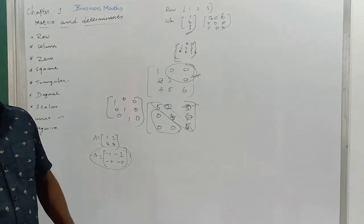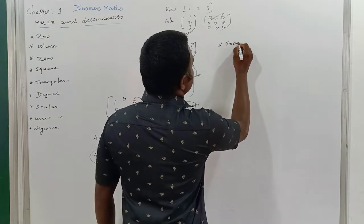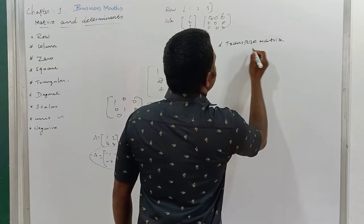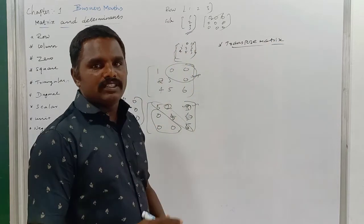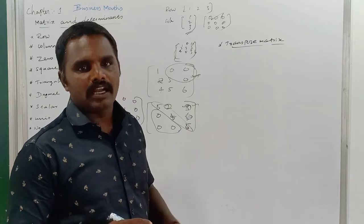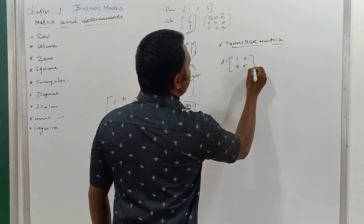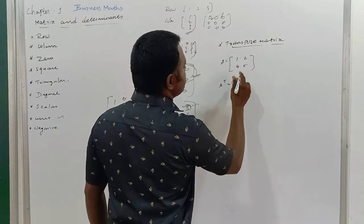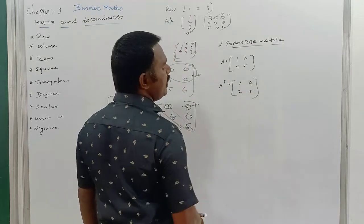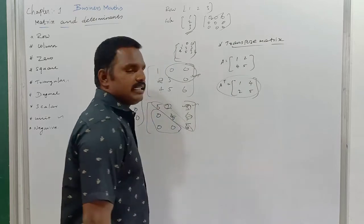Next is the transpose matrix. Transpose means we convert rows into columns and columns into rows. For example, if matrix A is [1, 2; 4, 5], then A transpose converts rows to columns: the result is [1, 4; 2, 5]. That is called the transpose matrix.